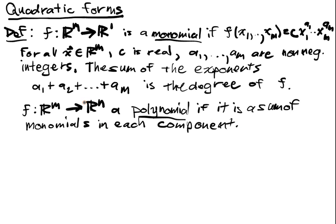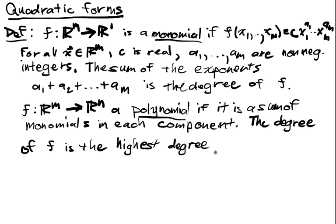That is, each of the one-dimensional functions when you expand this out are multivariate polynomials. The degree of F is the highest degree of the monomials forming F.